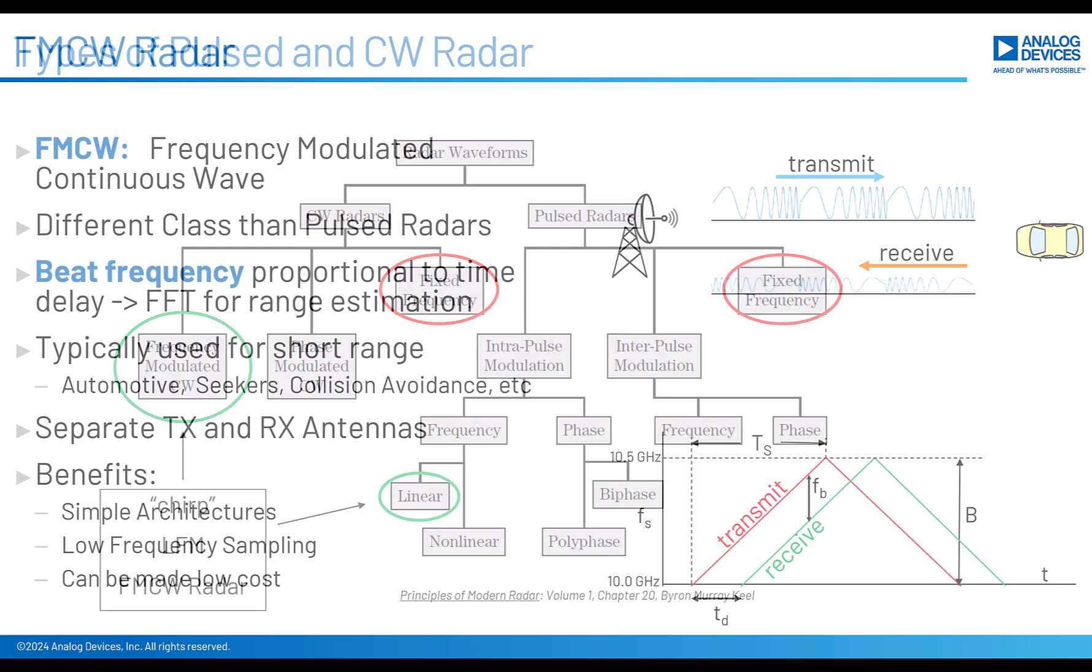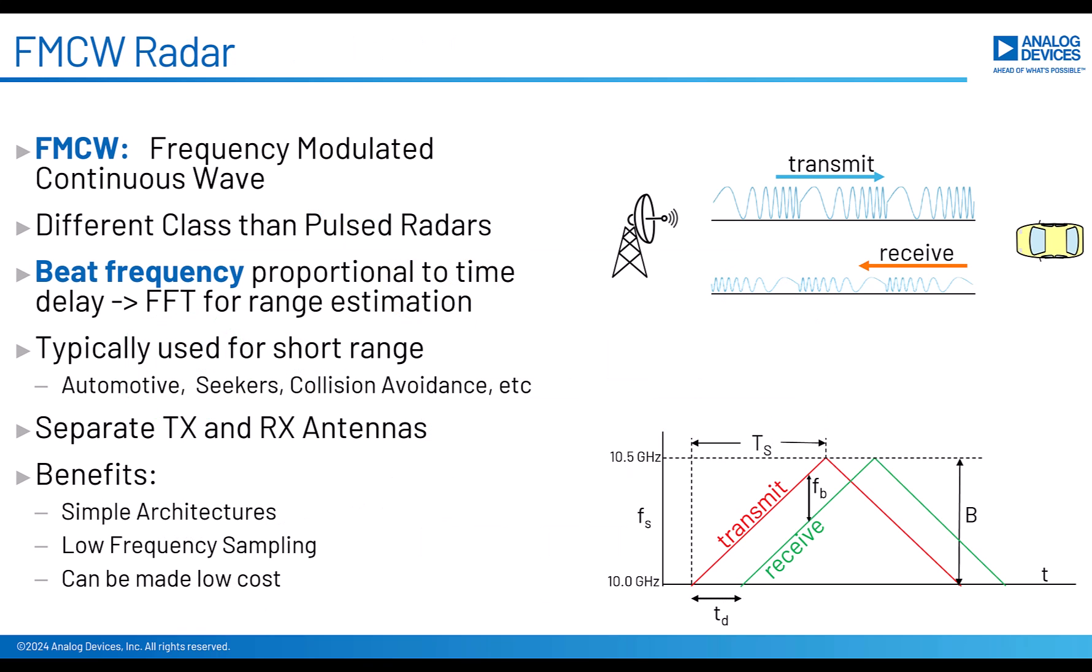This is what an FMCW radar looks like. Most commonly, we use an LFM waveform. That's what's shown here. LFM stands for linear frequency modulation. So it just means that the rate of frequency change is constant. And so you get a waveform that looks something like what's shown. You can see that it starts out with a low frequency and then it goes higher in frequency. And it is a continuous signal. So there is always something being output from the transmitter. And this requires a separate antenna for transmit and a separate antenna for receive.